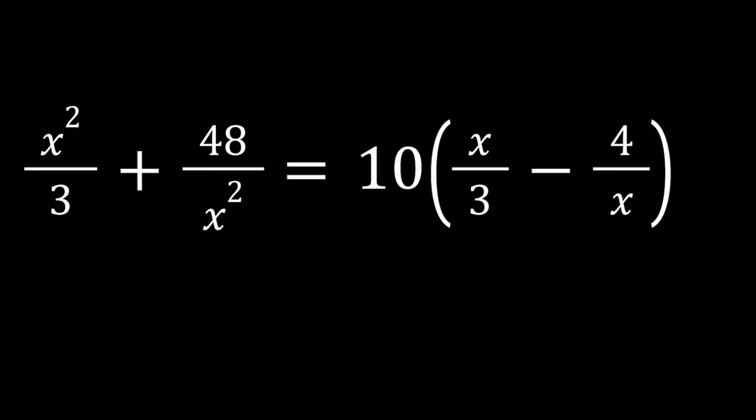Hello everyone. In this video we're going to be solving an equation. I didn't really know how to call this. It's not polynomial. Maybe it's rational. Whatever. We have this equation: x squared over 3 plus 48 divided by x squared equals 10 times the quantity x over 3 minus 4 over x. And we're going to be solving for x values.